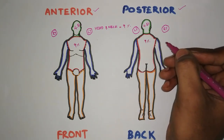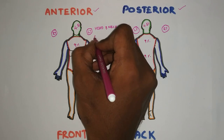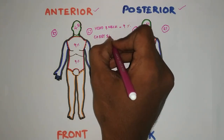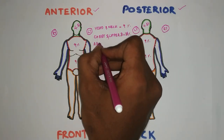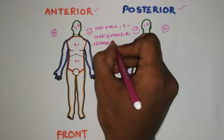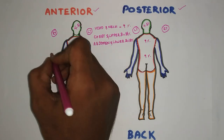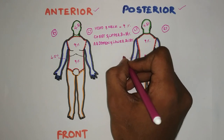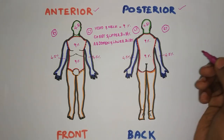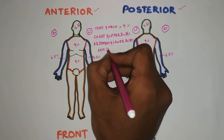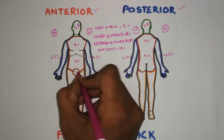For the chest, 9% on the anterior, and 9% for the posterior back side. For the abdomen, 9% anteriorly and the posterior back side 9%, so the chest and upper back total 18%. Each arm will be considered as 9% — 4.5% on the anterior and 4.5% on the posterior side — so both arms together are totally 18%.